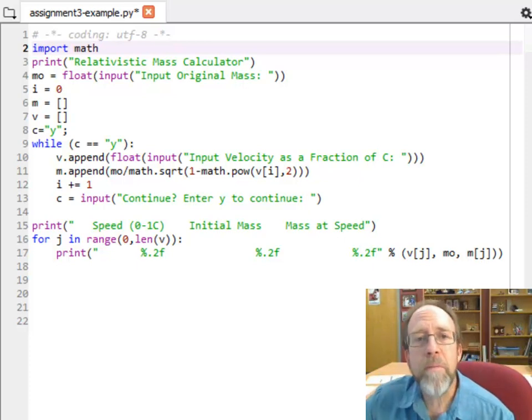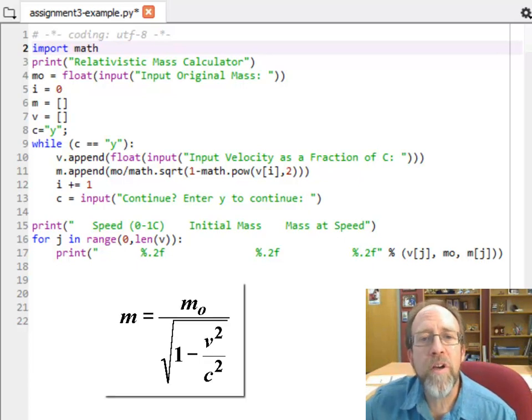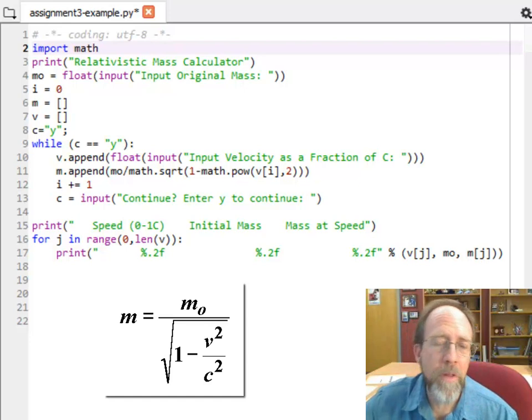First of all, I'm going to write a relativistic mass calculator. Essentially what it's going to do is apply the equation for the relative mass, based on things that are traveling near the speed of light, which is one of the relativistic equations.